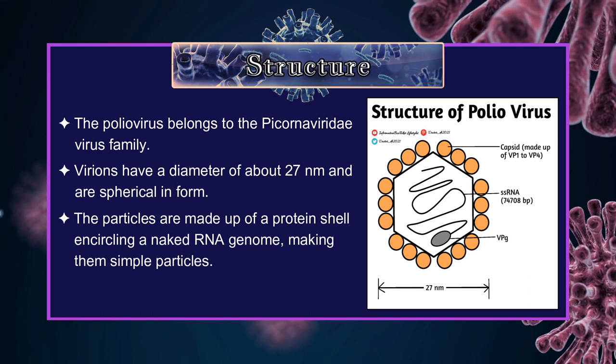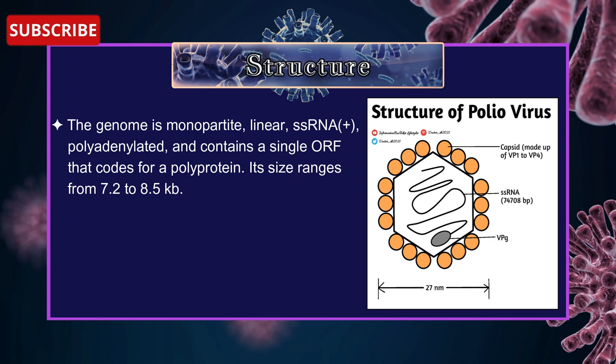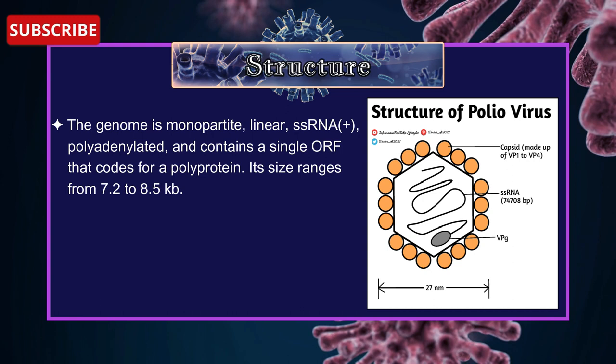The particles are made up of a protein shell encircling a naked RNA genome, making them simple particles. The genome is monopartite, linear, single-stranded RNA positive, polyadenylated and contains a single ORF that codes for a polyprotein. Its size ranges from 7.2 to 8.5 Kb.